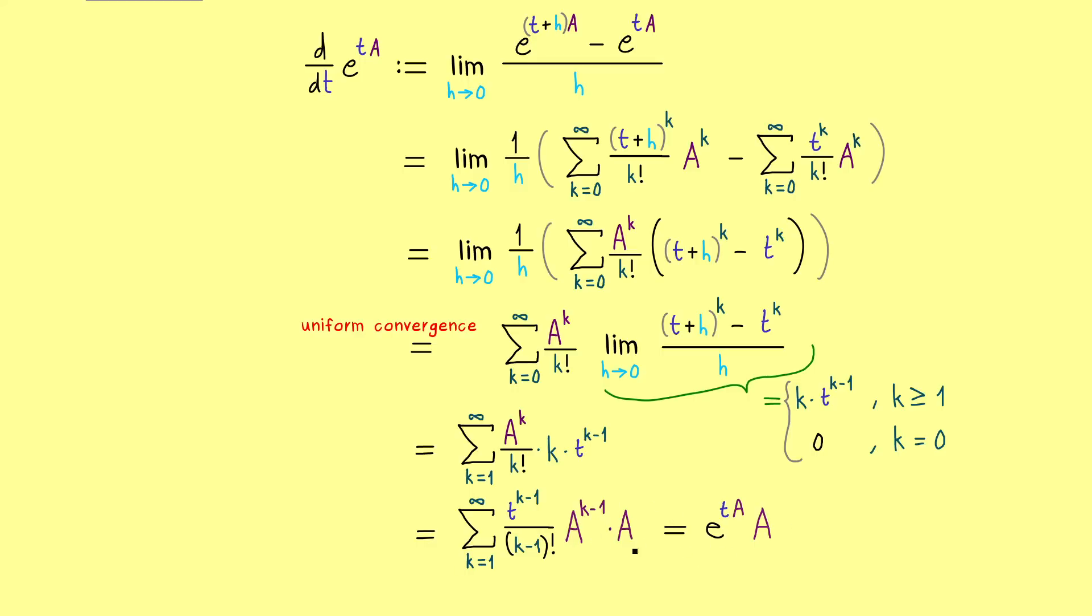But actually the right hand side was just a choice we took before because we could also rewrite this product and take A out from the left, which means we get an alternative result here where A is multiplied from the left to the matrix exponential. Now we have shown that both things are the same and represent the derivative of the matrix exponential at the point t.